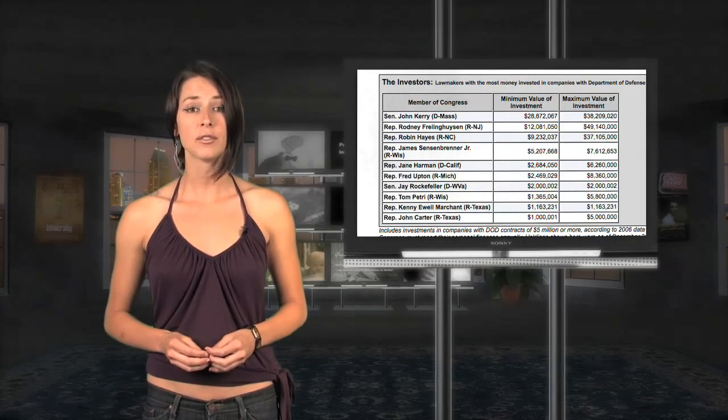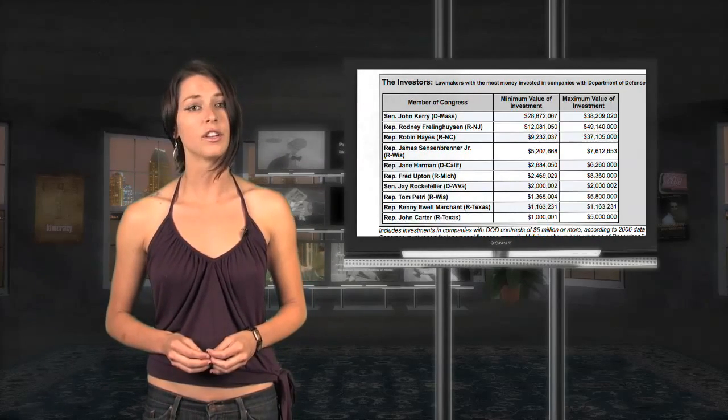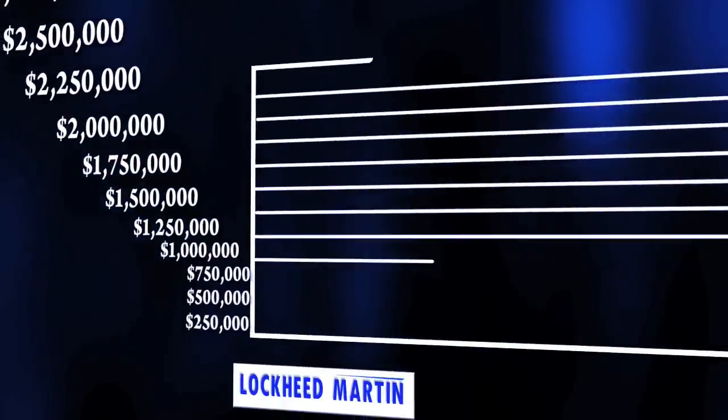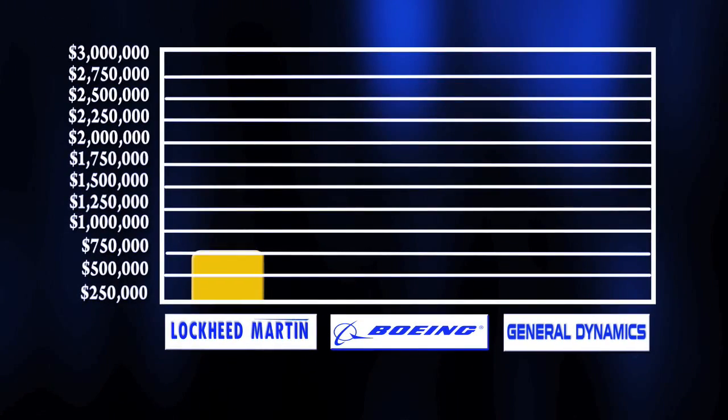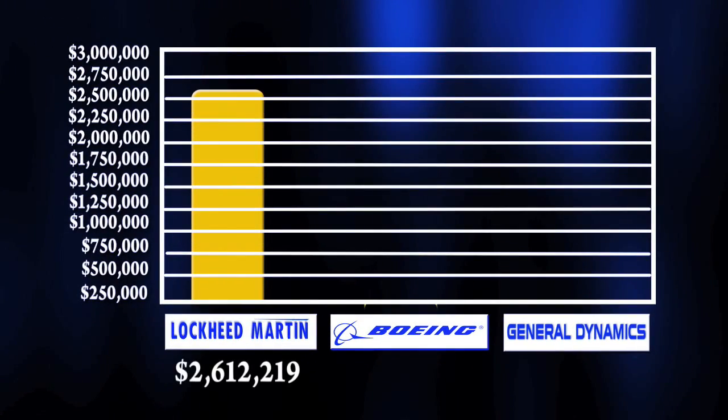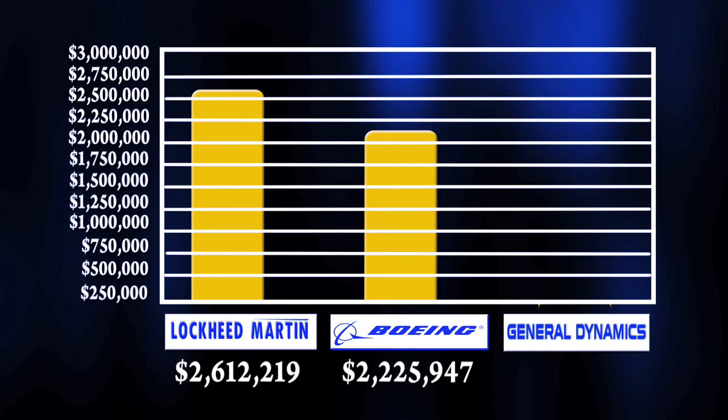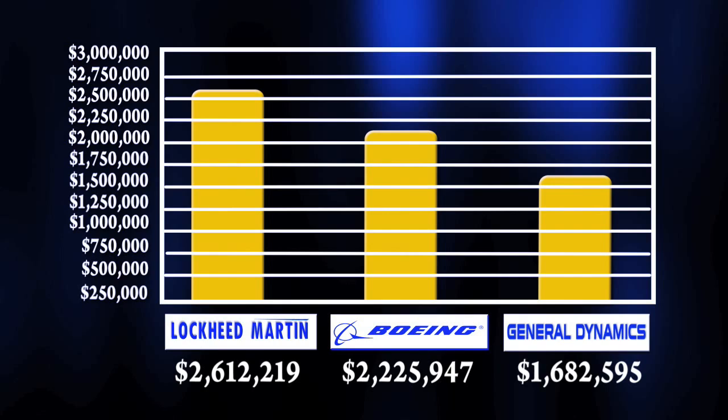Also, major defense corporations were heavily involved in the 2008 elections. Lockheed Martin gave over $2.6 million in total political campaign donations, with 49% to Democrats and 51% to Republicans. Boeing gave over $2.2 million in 2008, with 58% going to Democrats. General Dynamics provided over $1.6 million to both parties.